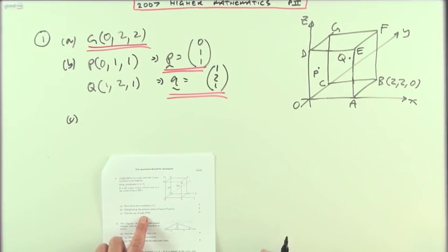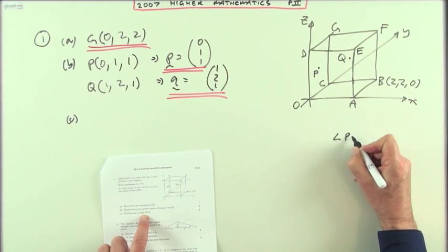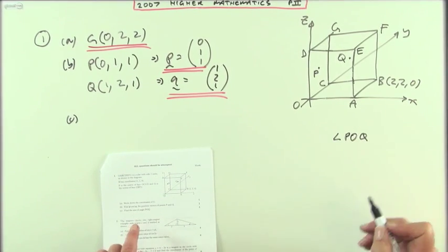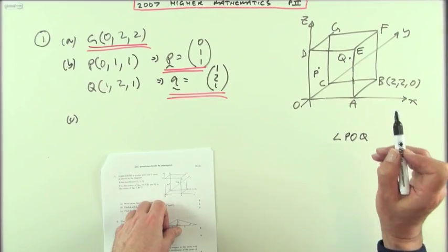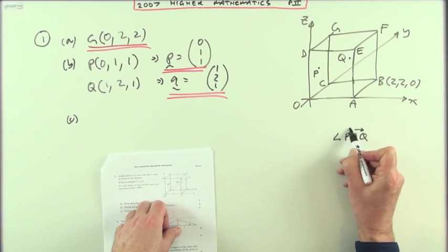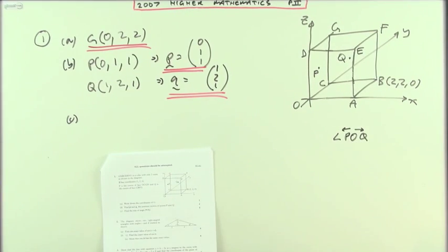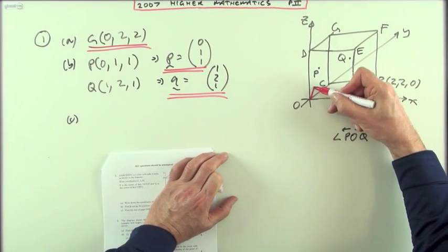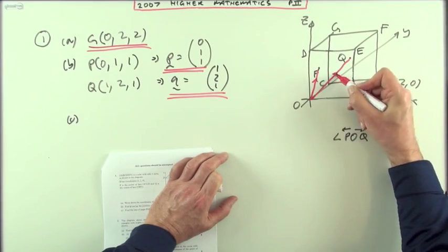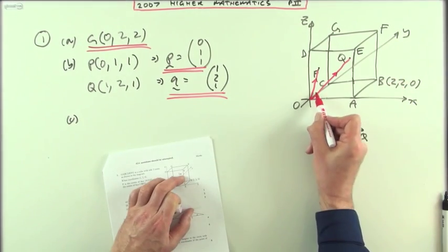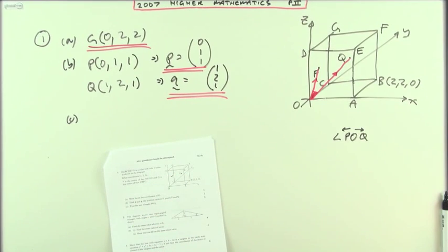And for Part C: What's the size of angle POQ? Now if you want angle POQ, the two vectors you'll need will be the vectors that radiate from the center, from the vertex of the angle in the diagram. The angle is this—the angle between those two vectors, this acute angle in here.